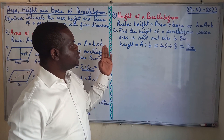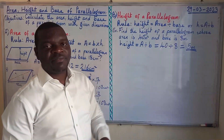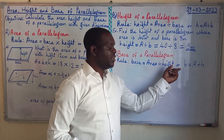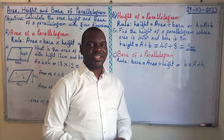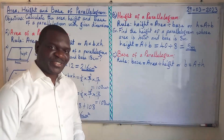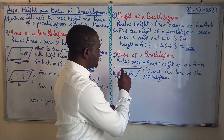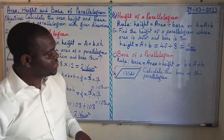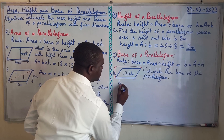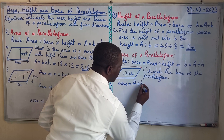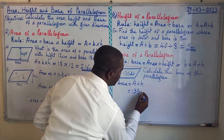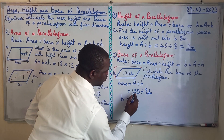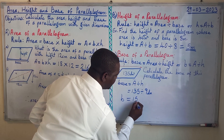If this is understood, we can move to the last aspect, which is the base of the parallelogram. The rule states that base = area ÷ height, or B = A ÷ H. For example: the area is 135 decimetres squared and the height is 9 decimetres. Base = 135 ÷ 9 = 15 decimetres.